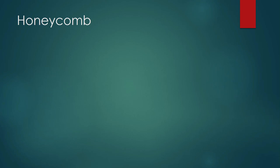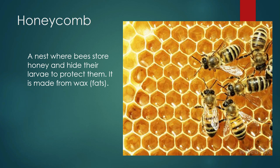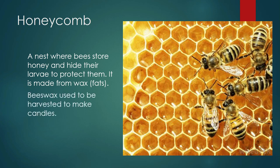One of the objects that we see around us that show a striking pattern would be honeycombs. Have you seen honeycombs in your life? Honeycombs are nests where bees store honey and hide their larvae to protect them. It is made from wax — wax are fats — and there was a time when these beeswax were harvested to make candles.